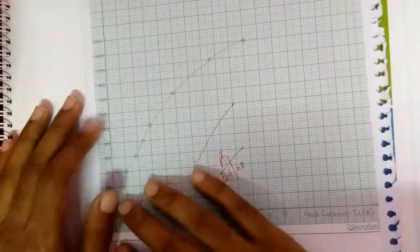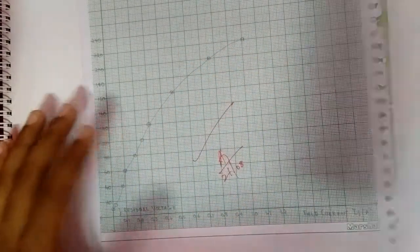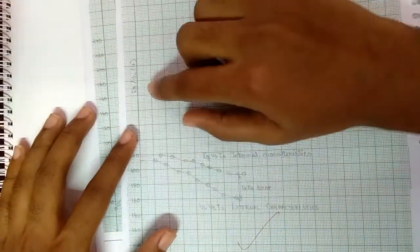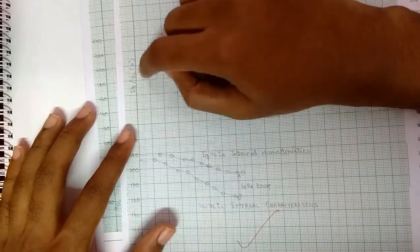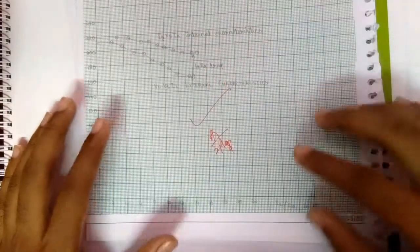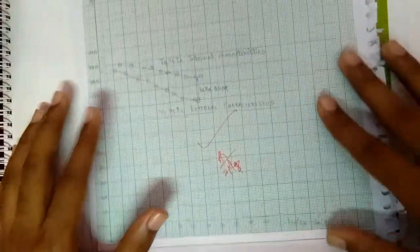For OCC characteristics, in the Y axis I have taken EG and in the X axis I have taken field current IF. For load characteristics, I have taken in the Y axis EG and VL, and in the X axis I have taken IL and IA.